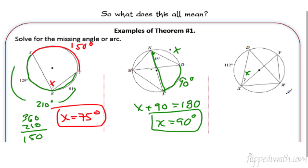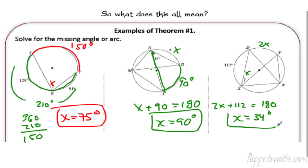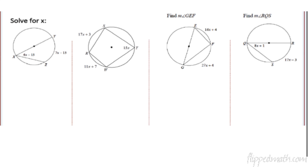What do we have here? This is another example — why don't you try it? Pause the video and do that one by yourself. Hopefully you worked it out. I put x as the angle, so the arc must be twice the measure of the angle because the angle is half the arc. So if this is x, this is 2x. I wrote a very simple equation: 2x plus 112 equals 180. When I solve for x, I get 34.